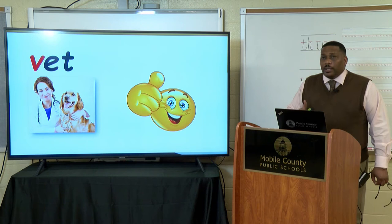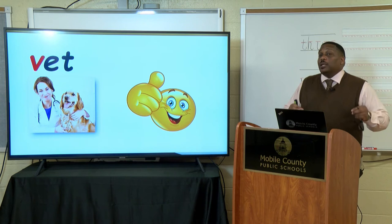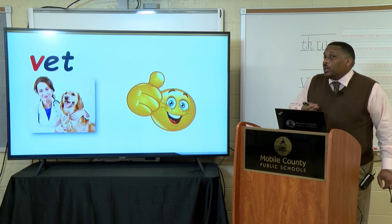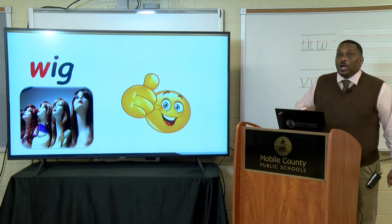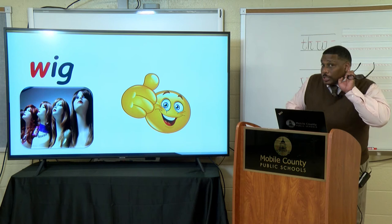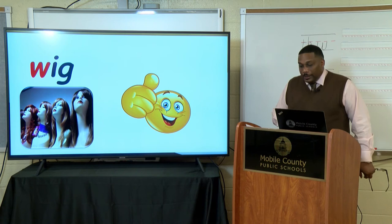Our next word — the word is wig. Do you hear the W sound in wig? W-wig. You do. There are all our beautiful models with their different wigs on. W-wig. Notice, kindergartners, that first letter is colored red, and my other letters are in black, so yes, you were correct. The initial sound — the first sound you hear in the word wig — is W. And we wrote our W, so you guys were absolutely correct.